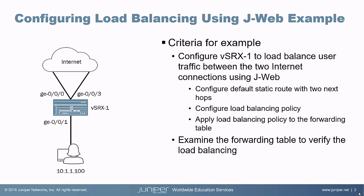We're going to have to do a few things. We need to configure a default static route with two next hops — one default static route, two next hops. Then we need to configure a load balancing policy that load balances the traffic for the forwarding table between those two links. Then we need to apply the load balancing policy to the forwarding table. And then we'll examine the forwarding table to verify that load balancing is actually occurring — we'll also take a look at the forwarding table beforehand to show you before and after.